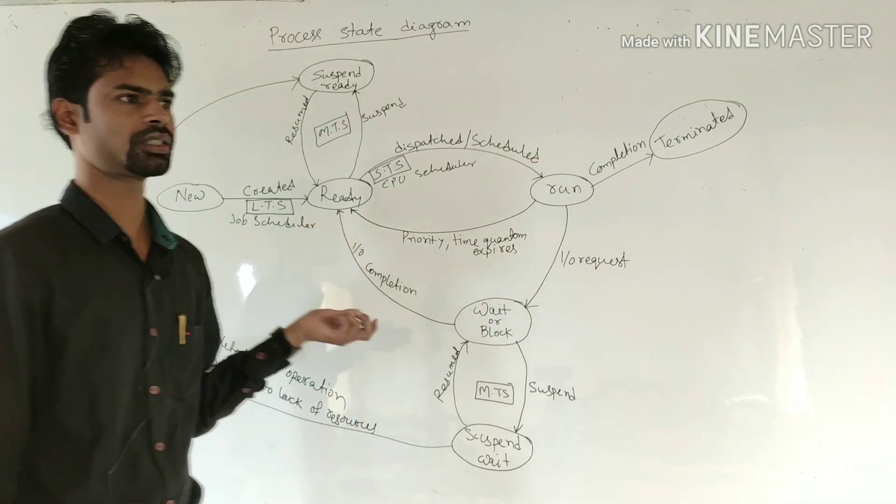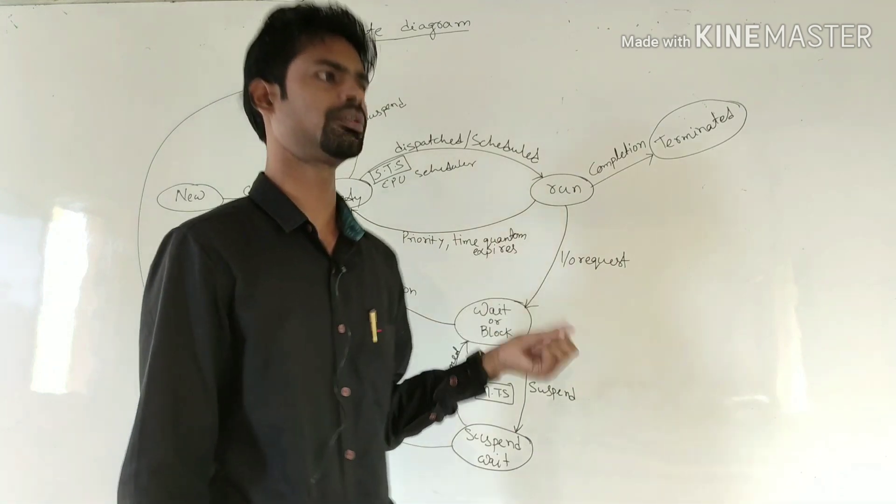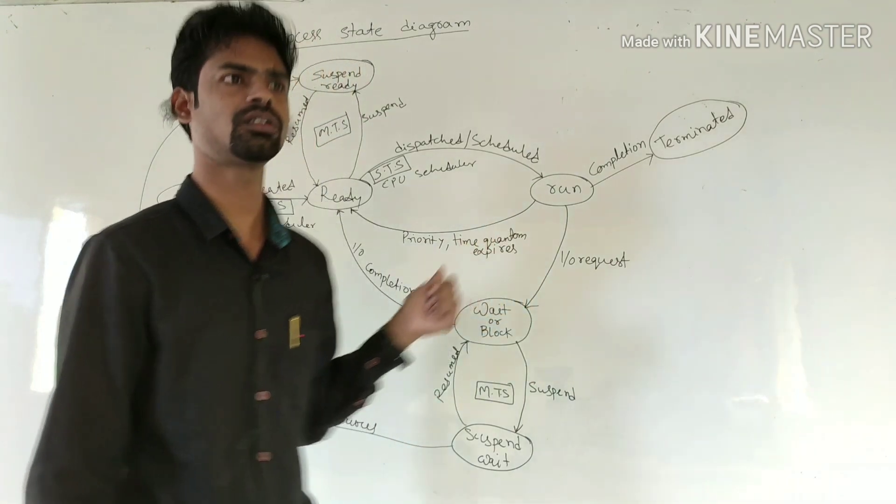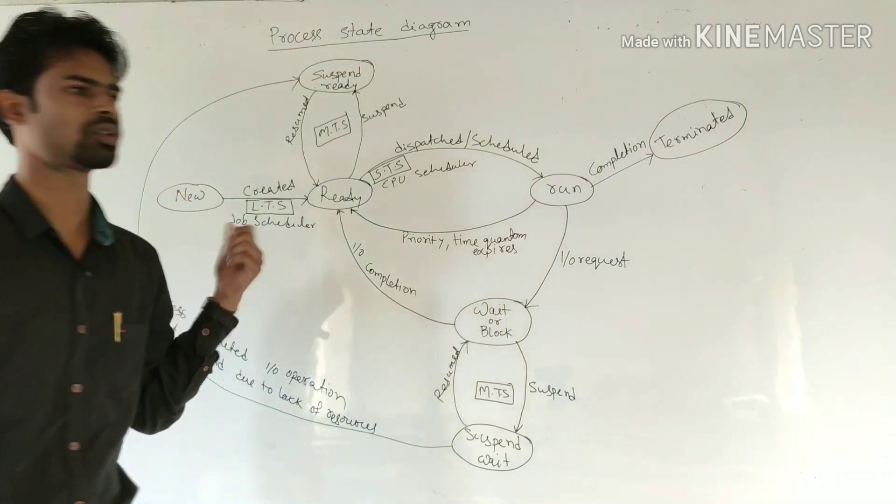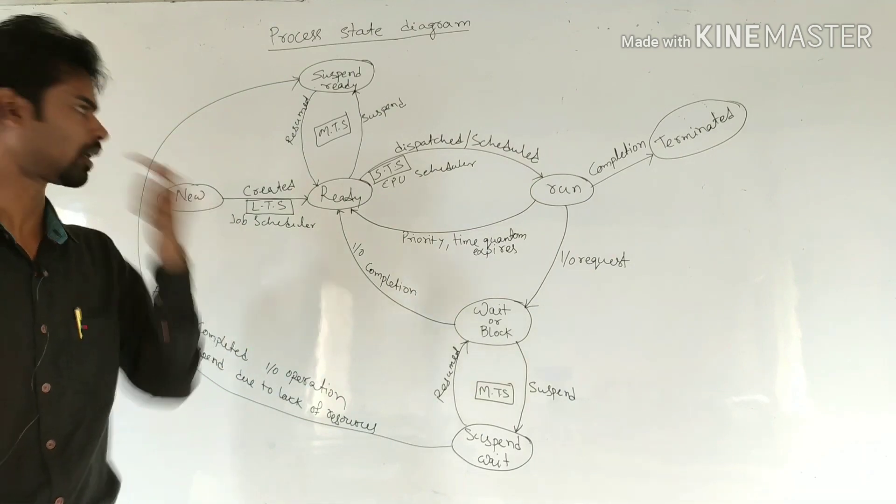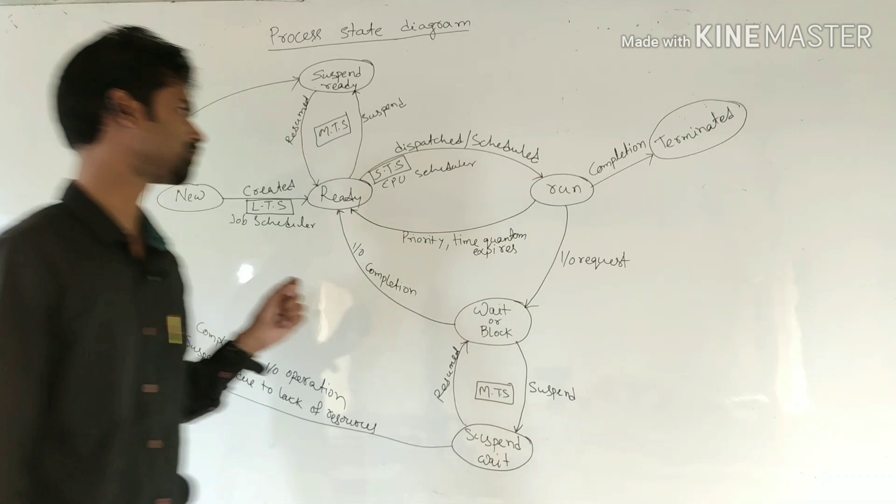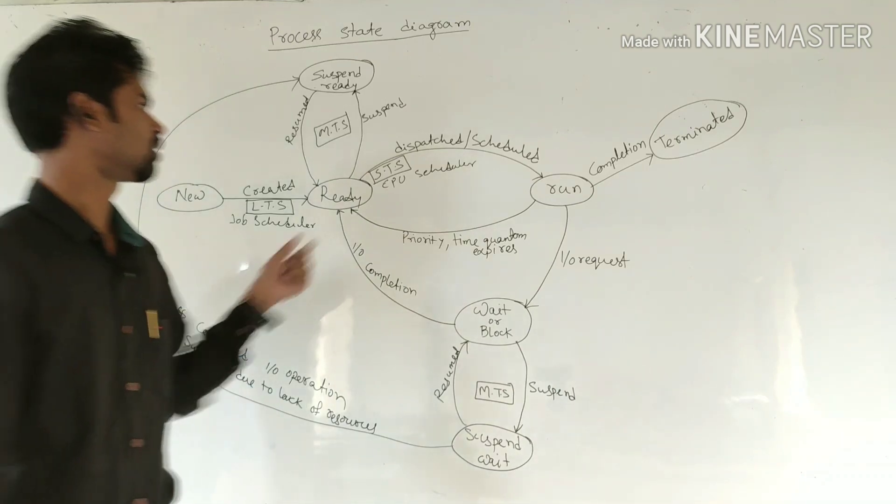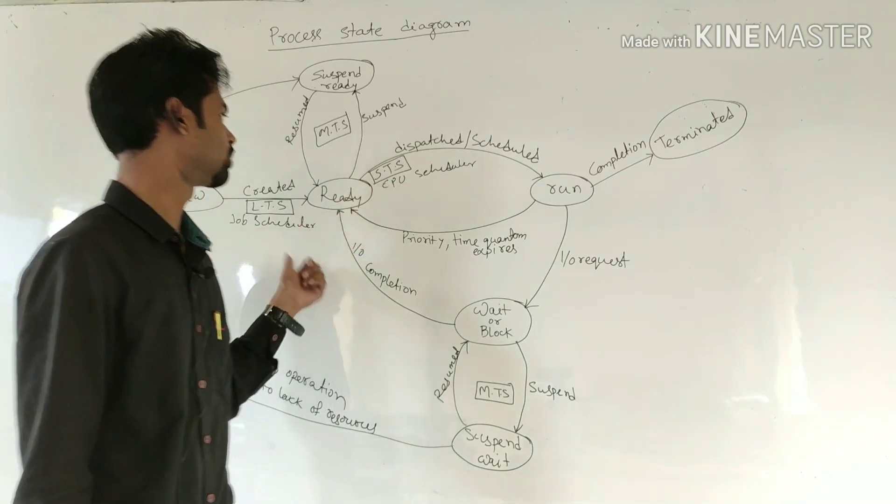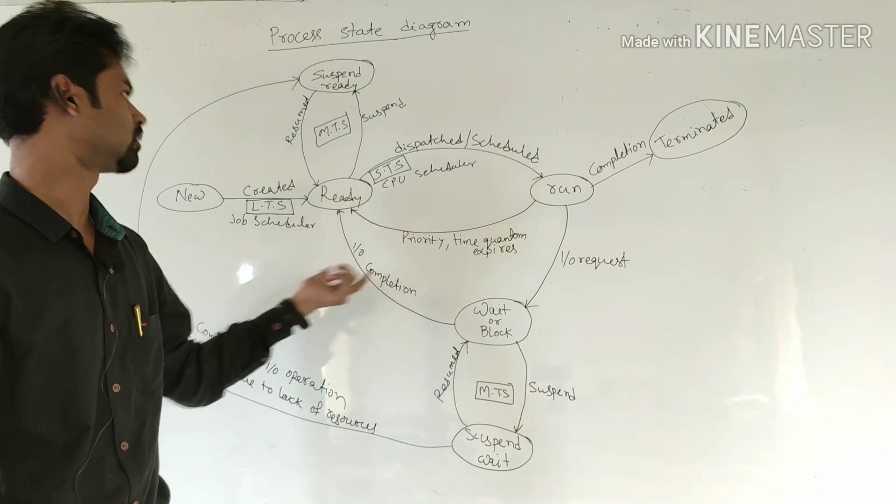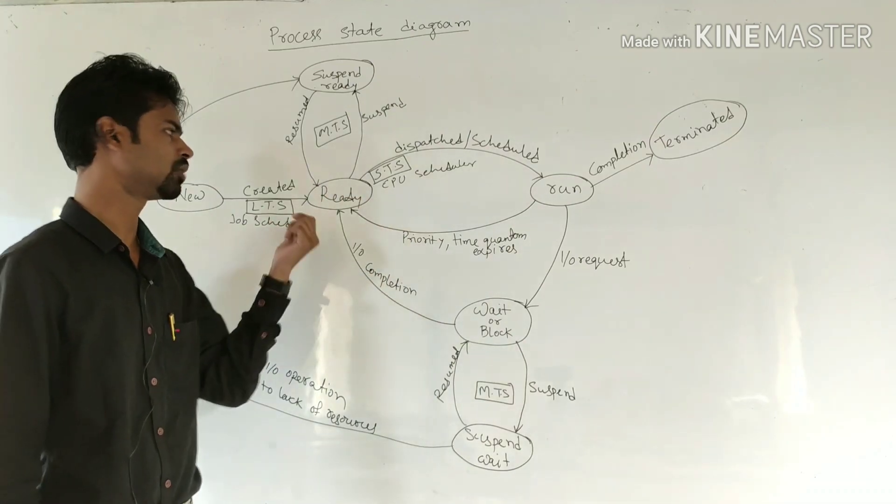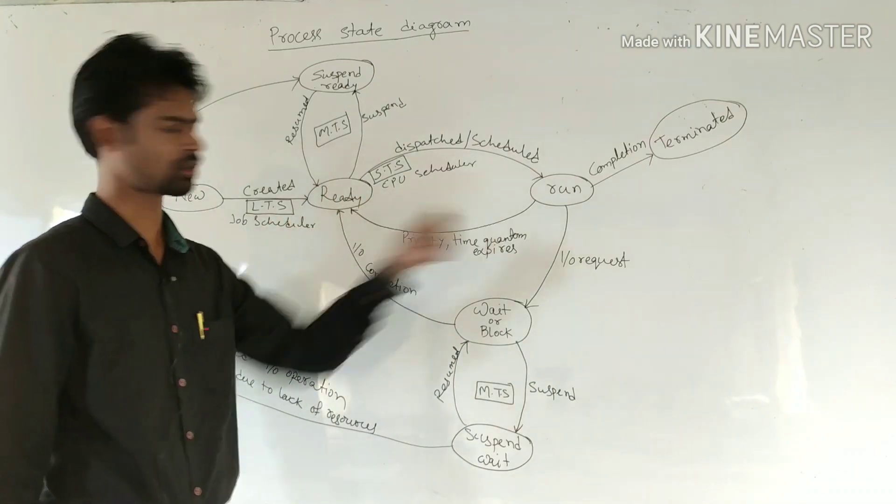In running state, there can be only one process running at a time. No more than one process can run at the same time in running state. The job of short-term scheduler is dispatching one process from ready state to running state.